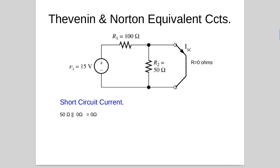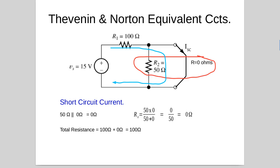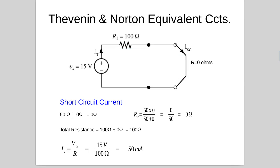Here we're looking for the short circuit current. If we put a short circuit at the output, the resistance across the output is 0 ohms, so the 50 ohms plays no part — 50 ohms in parallel with 0 ohms is 0 ohms. So we have a series resistance of 100 ohms and 0 ohms, giving a total resistance of 100 ohms. With a 15 volt source, that gives us 15 volts over 100 ohms, which is 150 milliamps flowing through the 100 ohm resistor and through the short circuit.